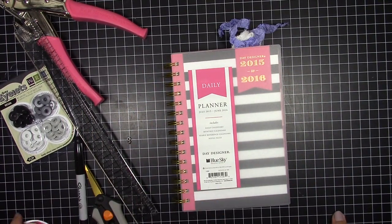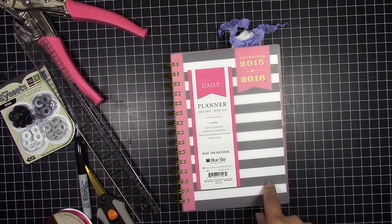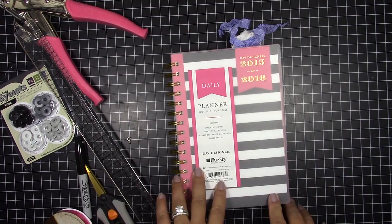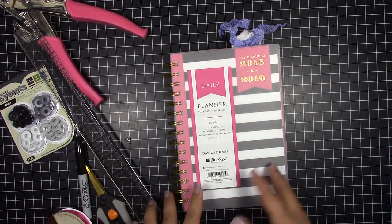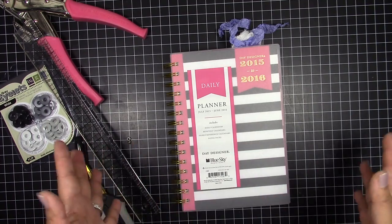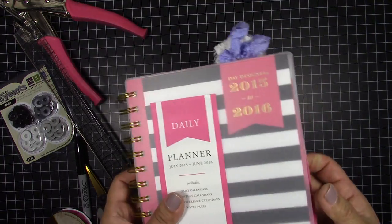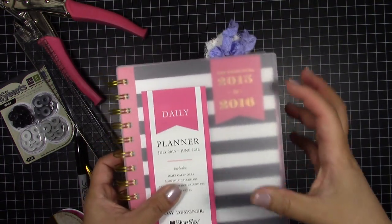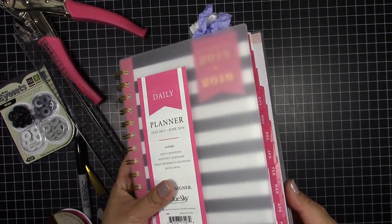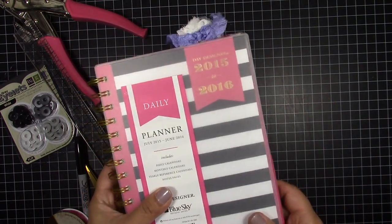Alrighty, so my next planner hack is going to show you guys how to attach your own elastic to your planners. So you can have a planner, like if you have one from Walmart or this day designer from Target or whatever other planners that are spiral bound like this, but they don't have an elastic and you feel more secure having your things bound together. Let me show you guys how to do that by putting an elastic on the back so it can drape over or secure your book closed.